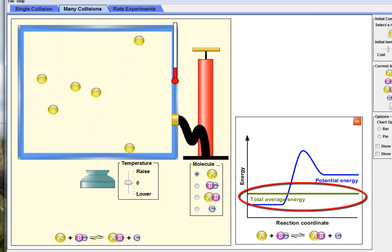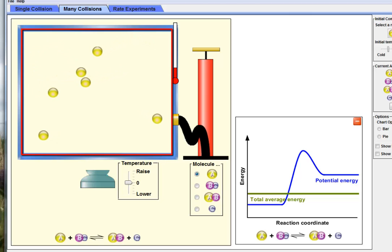So let's hit play. And again, what we're trying to notice is that the total average energy, now we've got a distribution. Some are moving fast, some are moving slow.